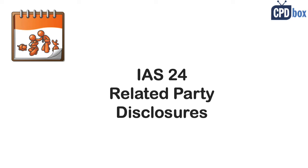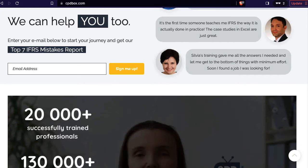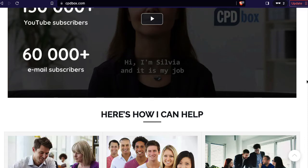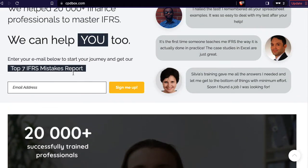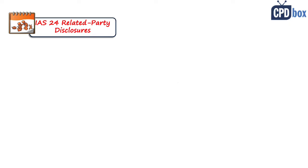Related parties — a huge and sensitive topic. I am Sylvia of cpdbox.com. We help thousands of people to master IFRS and we can help you too. IAS 24 is one of the oldest standards, firstly issued in 1984 and then later amended multiple times, with the last amendment in 2013.